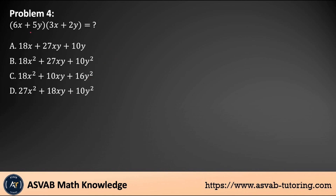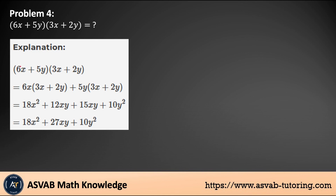Problem number four: multiply the factors (6x + 5y)(3x + 2y). Use the FOIL method — multiply each term in the first binomial by each term in the second. 6 times 3 gives 18x squared; 6 times 2 gives 12xy; 5 times 3 gives 15xy; 5y times 2y gives 10y squared. Combining like terms: 12xy plus 15xy gives 27xy. The final answer is 18x squared plus 27xy plus 10y squared.